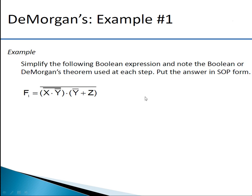Hello everyone. In this video I will be discussing some examples on De Morgan's theorem. Let's consider this example: simplify the following boolean expression and note the boolean or De Morgan's theorem used at each step, put the answer in SOP form. SOP stands for sum of product. The given expression is f1 = (x · ȳ)̄ · (ȳ + z)̄.